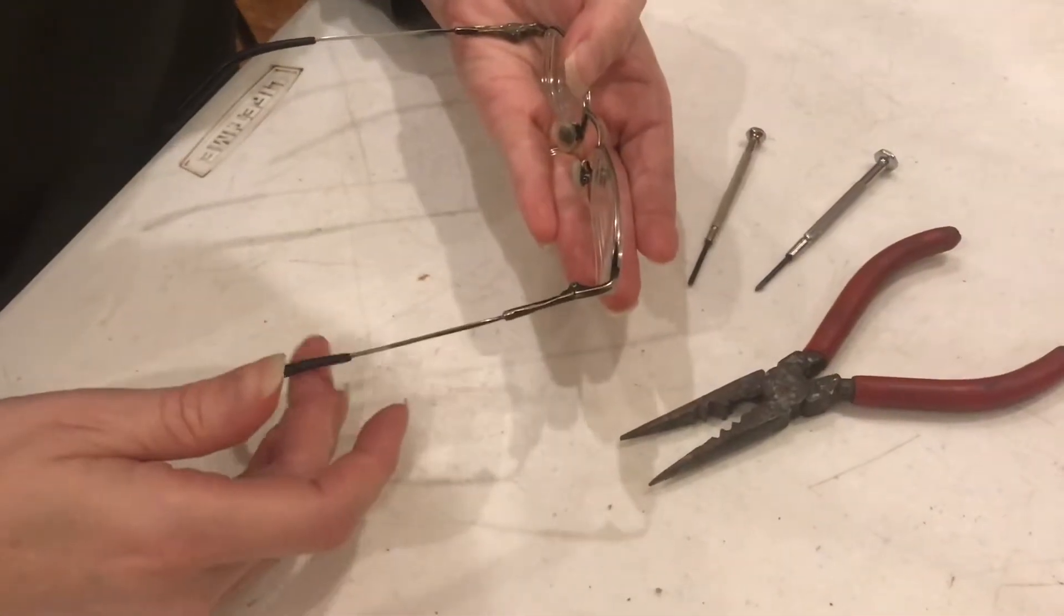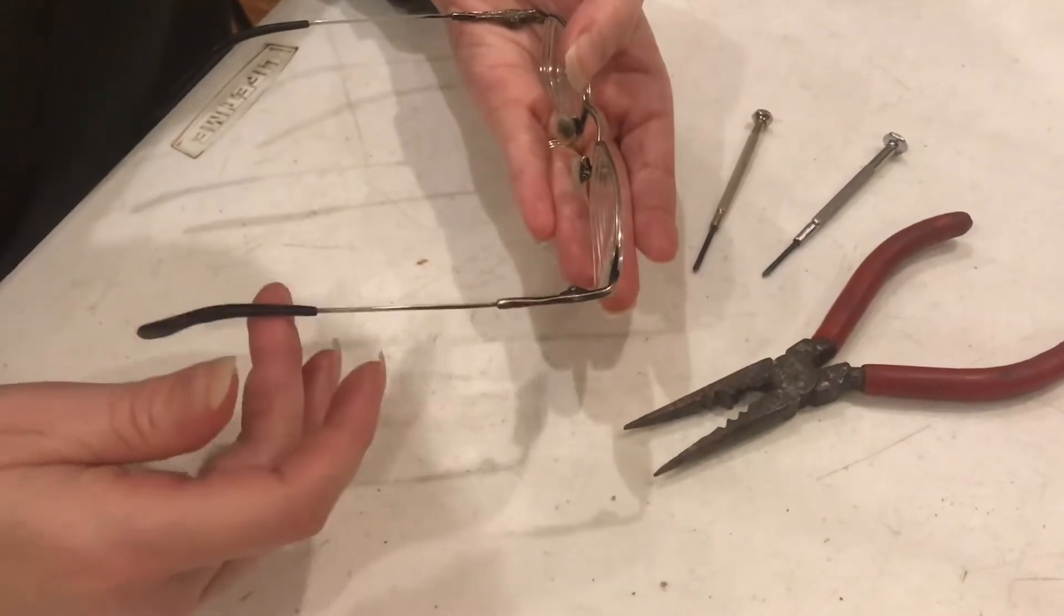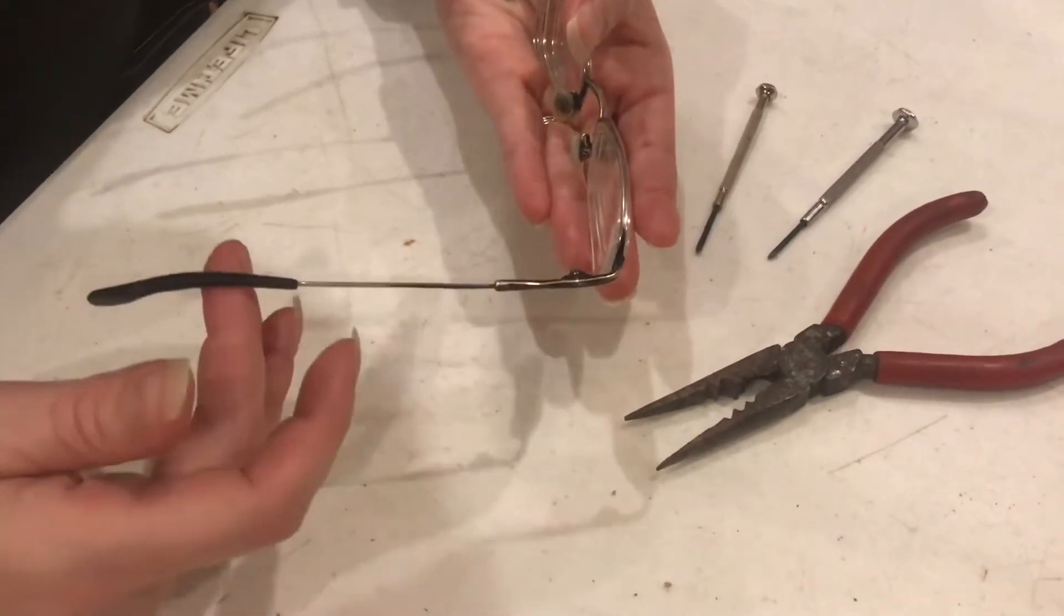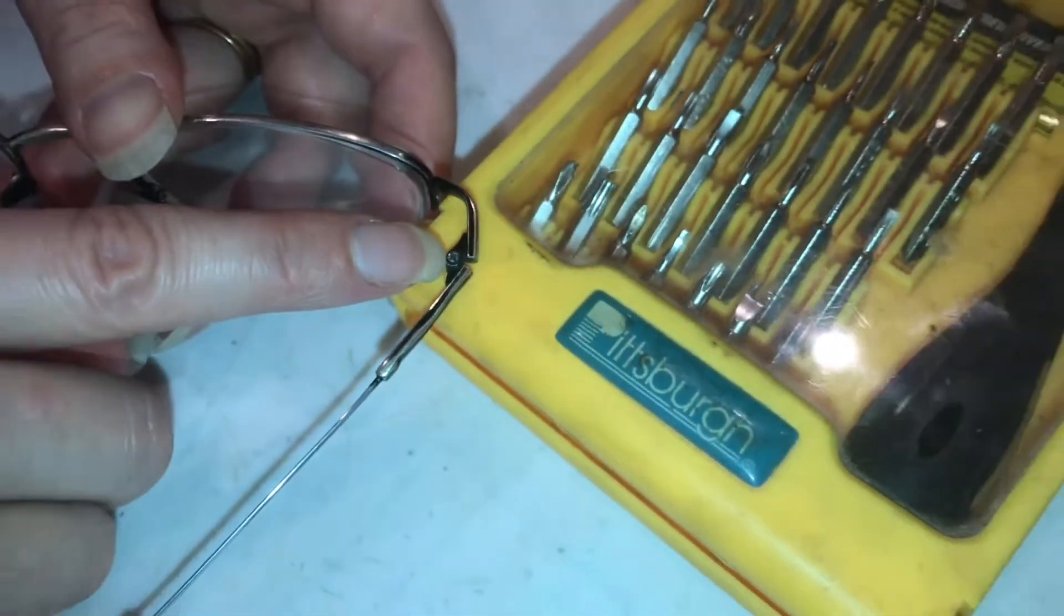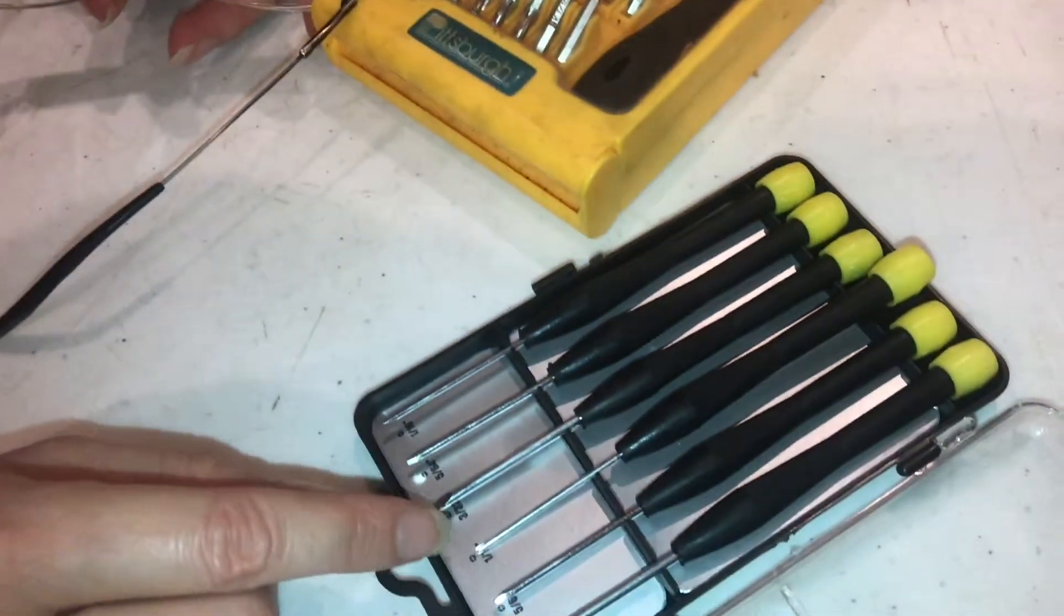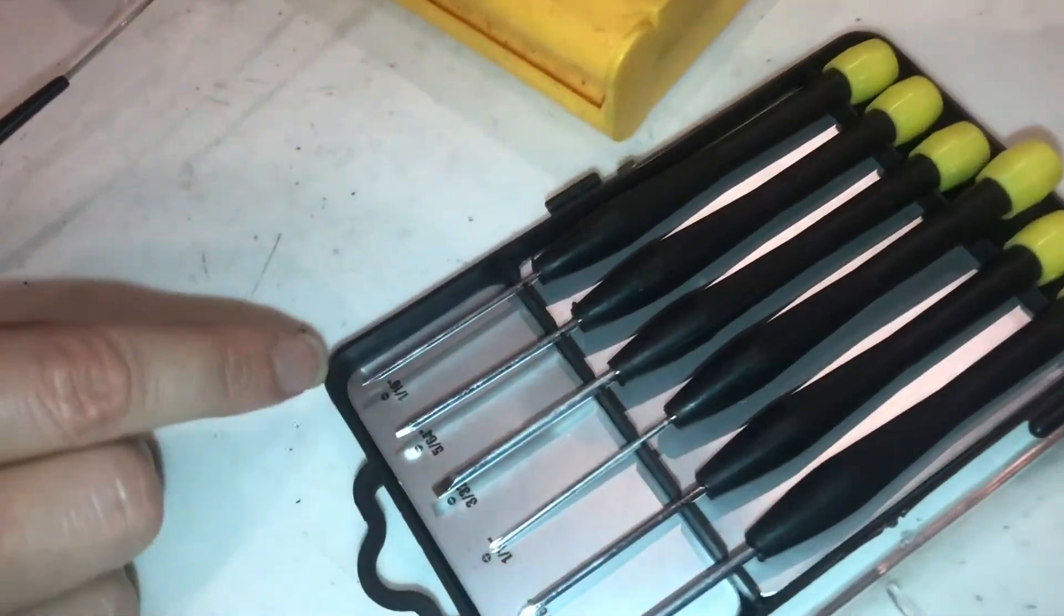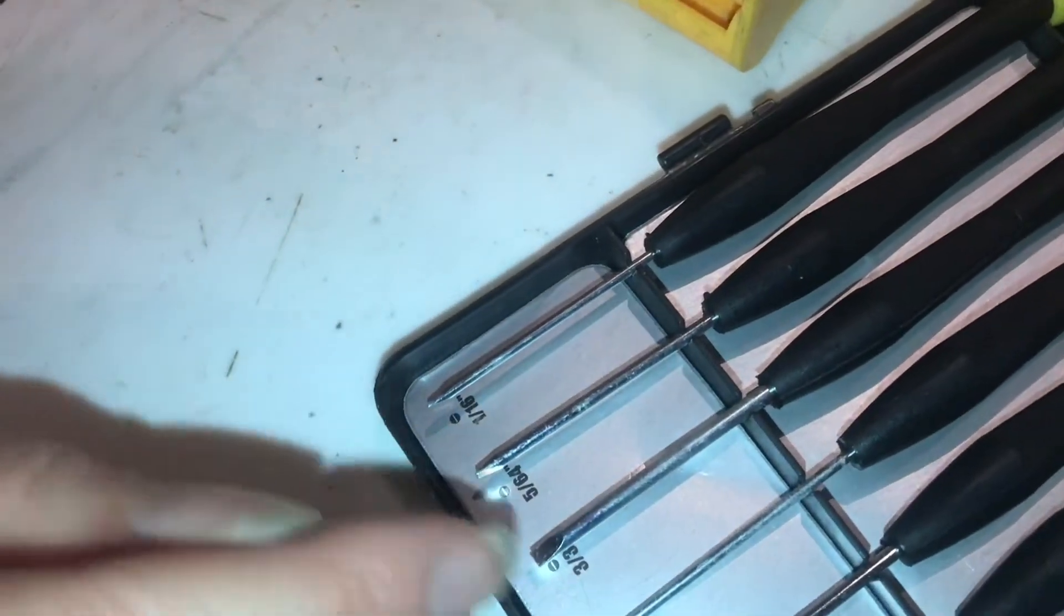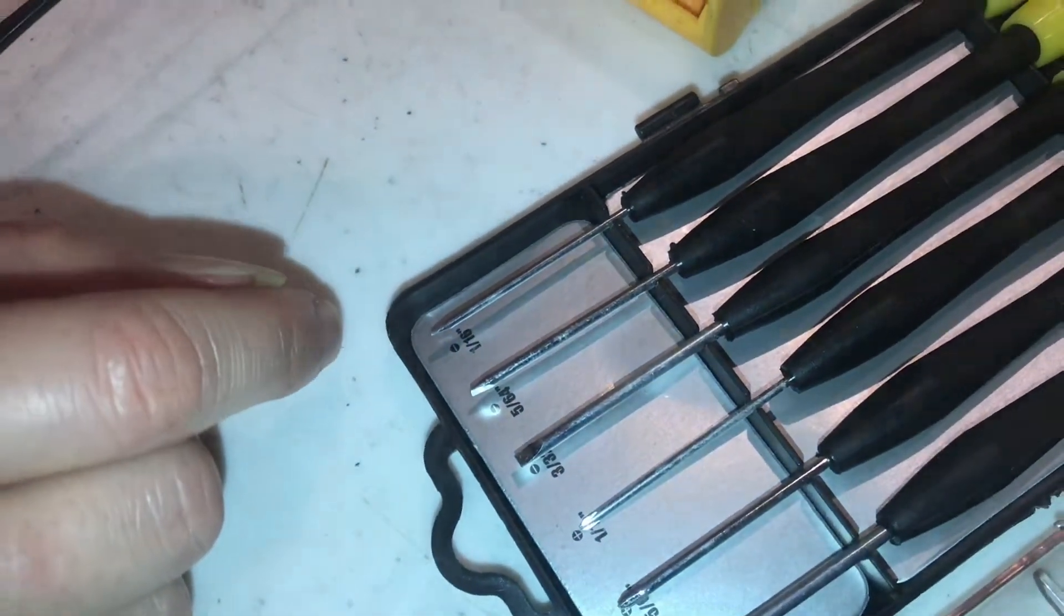We're going to use a combination of different kinds of screwdrivers and a pair of pliers to make this repair. This tiny screw is going to take either a flathead or a Phillips, probably a sixteenth inch will work. Either flathead or Phillips will do the job.